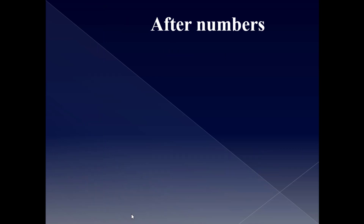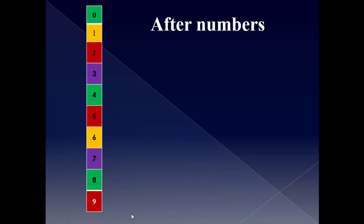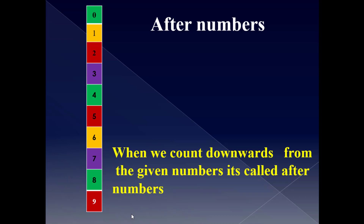After numbers — what do you mean by after numbers? When we count downward from the given numbers, it's called after numbers. What will come after 7? We have to find 7 and count one step down. We get the number 8. 8 will come after 7.